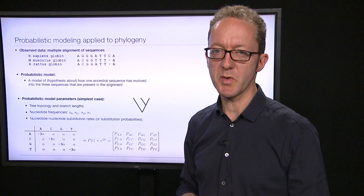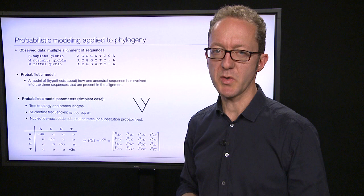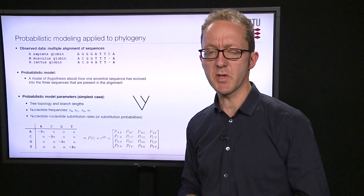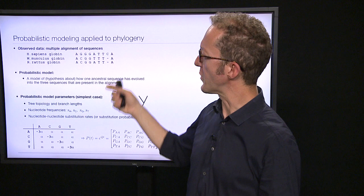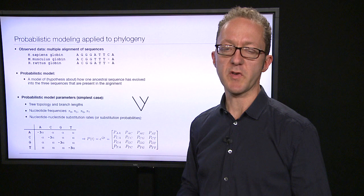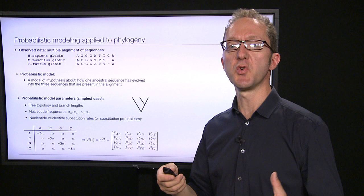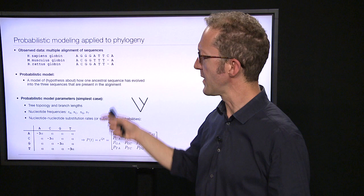In the case of phylogeny, the data we're looking at is typically a multiple alignment of sequences. In principle this is a simplification, since the data is really the individual sequences; if we treat the alignment as observed data, we're ignoring possible errors in alignment. But typically this is the approach we take.